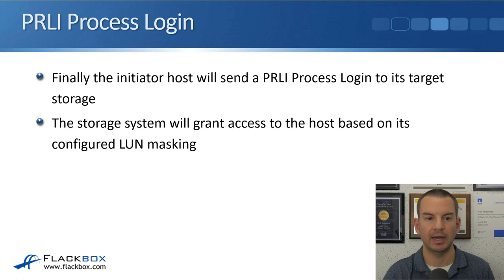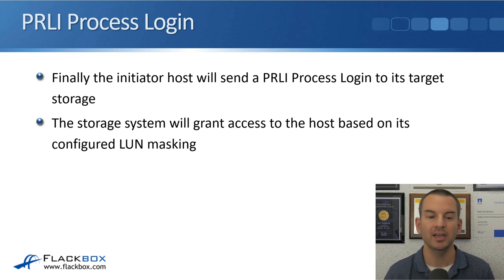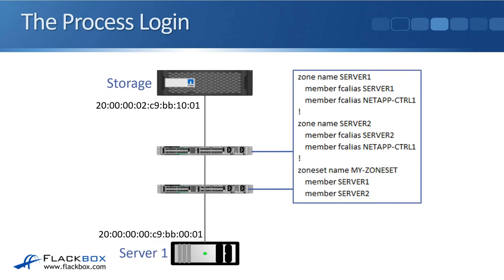The next thing that happens is the PRLI, which is the process login. The initiator host will send a PRLI process login to its target storage at the far end. The storage system will grant access to the host based on its configured LUN masking. So server 1 sends the process login all the way up to the storage system, and that includes its WWPN. The storage system then looks in its LUN masking information and sees that that WWPN is allowed to connect to the LUN for server 1, and server 1 now connects to its storage.